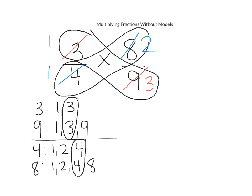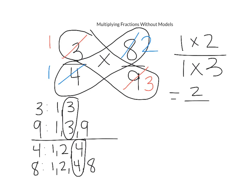Now we've simplified our fractions considerably, and we can go ahead and multiply straight across. Based on how we simplified, we have one times two over one times three. One times two equals two, and one times three equals three. So this shows that using the same problem but a different strategy, we get the same answer of two thirds. This strategy will come in handy when your numbers start getting larger, because your numbers are going to be smaller if you simplify first before you multiply.